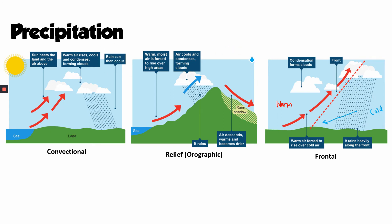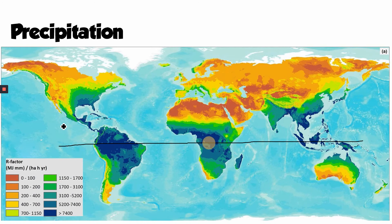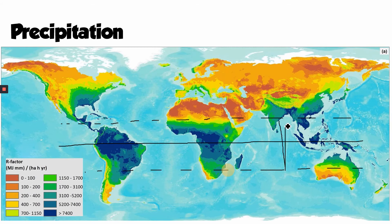All these different types of rainfall are significant in controlling how much water we have in different parts of the world. Looking at a global precipitation map, the dark blue colours represent the largest levels of rainfall, down to yellows and oranges where there's much less. We can see that rainfall is really concentrated in tropical areas — the equator runs roughly along the middle, with the Tropic of Cancer above and the Tropic of Capricorn below.